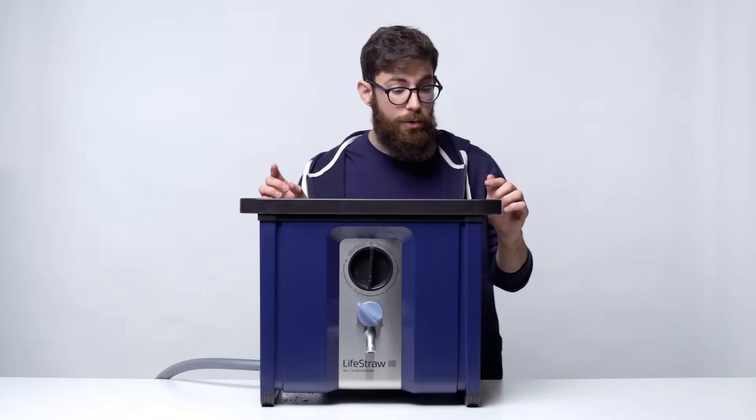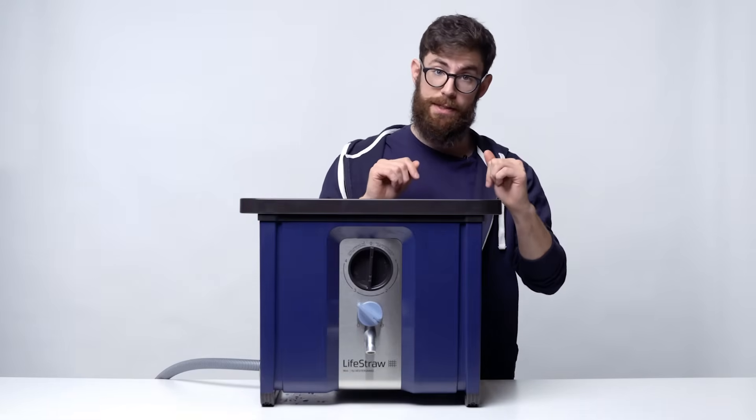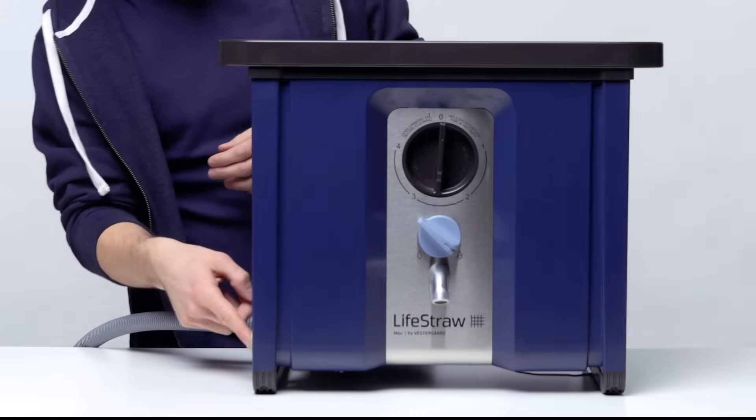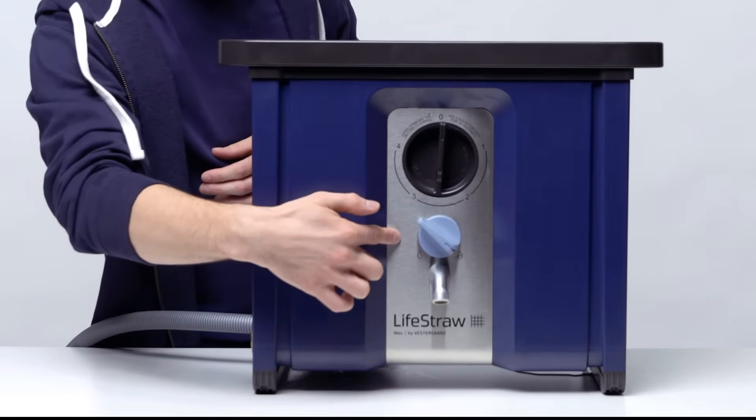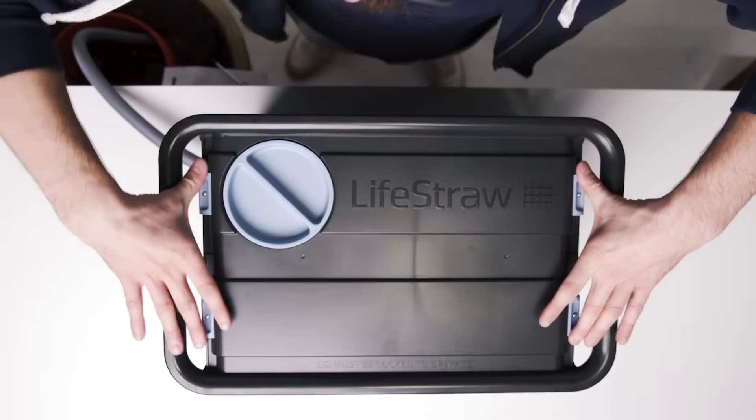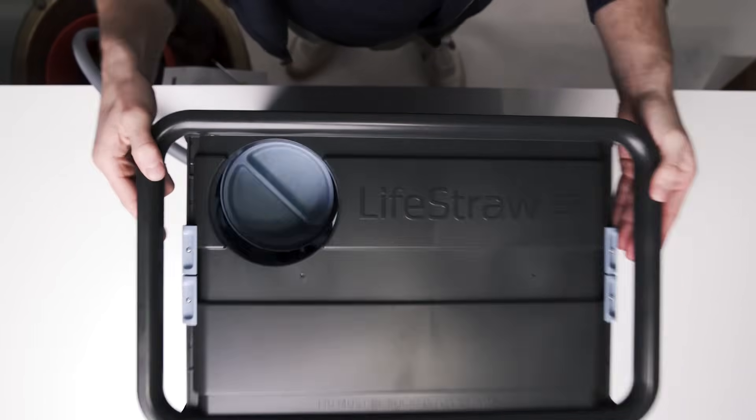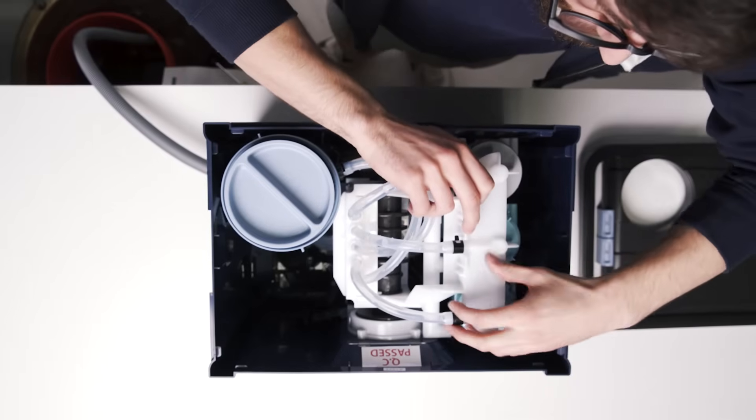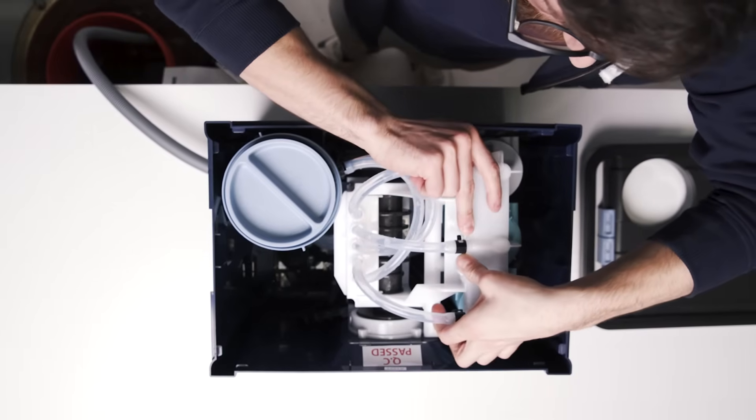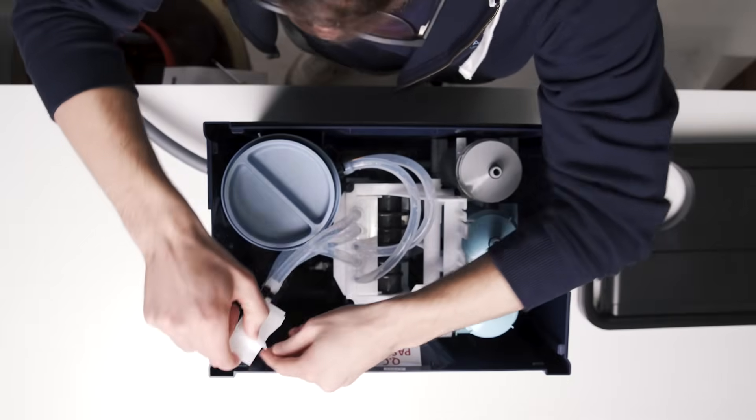Eventually, you're going to need to replace the filters in your Max. First things first, make sure your water is disconnected and your water dial is set to off. Next, open up your lid. Over here is your filter bridge. Go ahead, unclip that and set it carefully to the side.